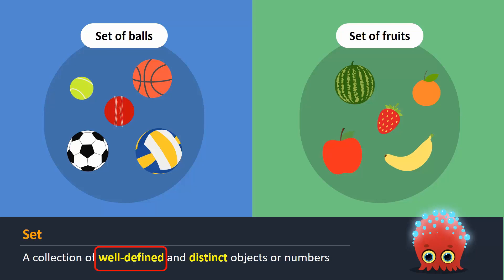Because of these well-defined properties, we know that the basketball does not belong to the set of fruits. Similarly, the apple cannot go into the set of balls. The second keyword is distinct. This means that every object is unique and no two objects are identical. For example, in the set of balls, we cannot have two identical basketballs.